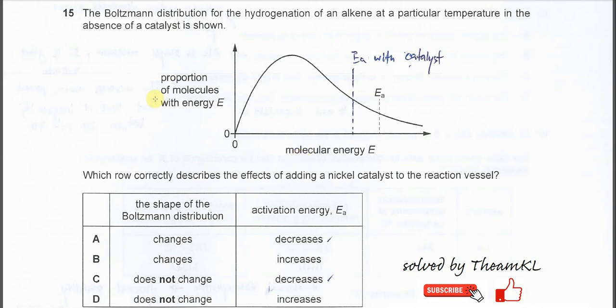Question 15. This is the Boltzmann distribution for the hydrogenation of an alkene at a particular temperature, just one temperature, and in the absence of a catalyst. Which row correctly describes the effects of adding a nickel catalyst to the reaction vessel?